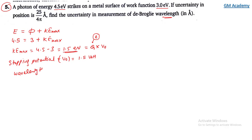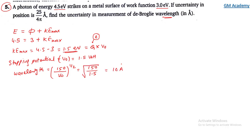Stopping potential V₀ = KE(max) / e = 1.5 volt. The de Broglie wavelength is calculated using λ = √(150/V₀) = √(150/1.5) = 10 angstrom.